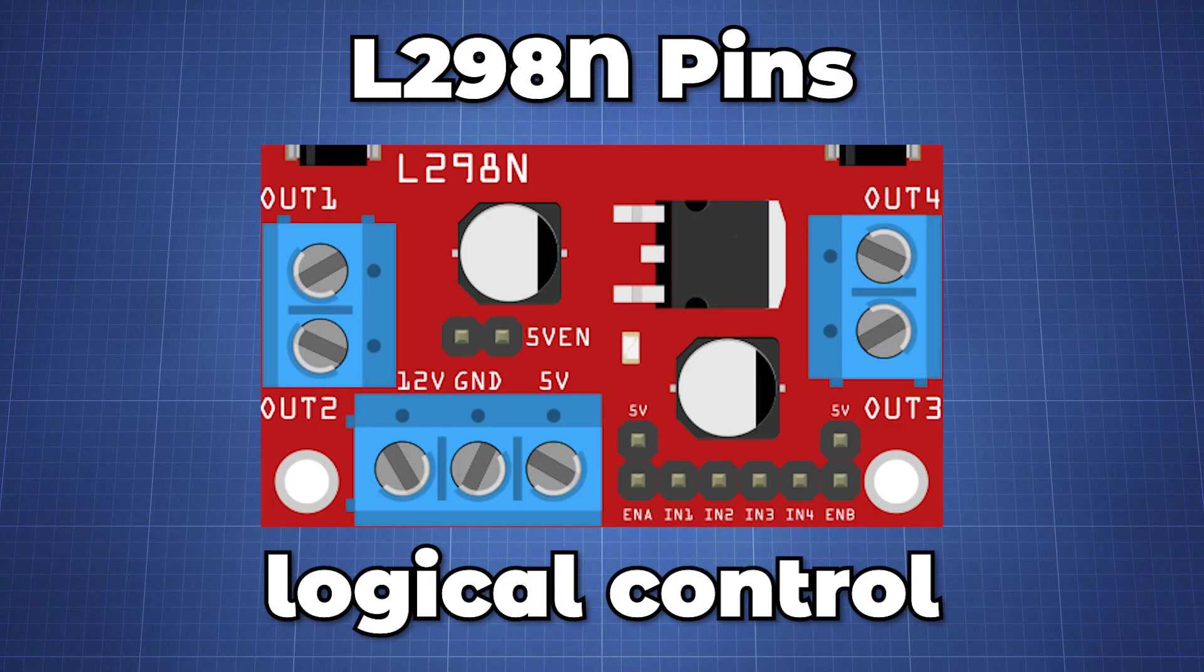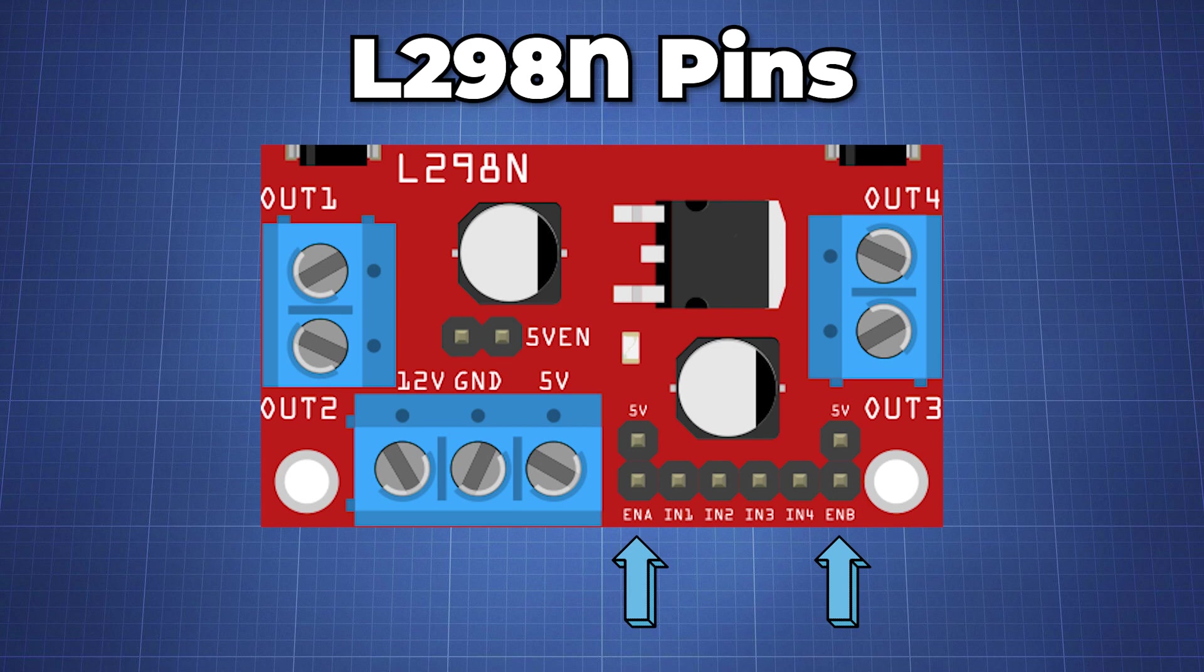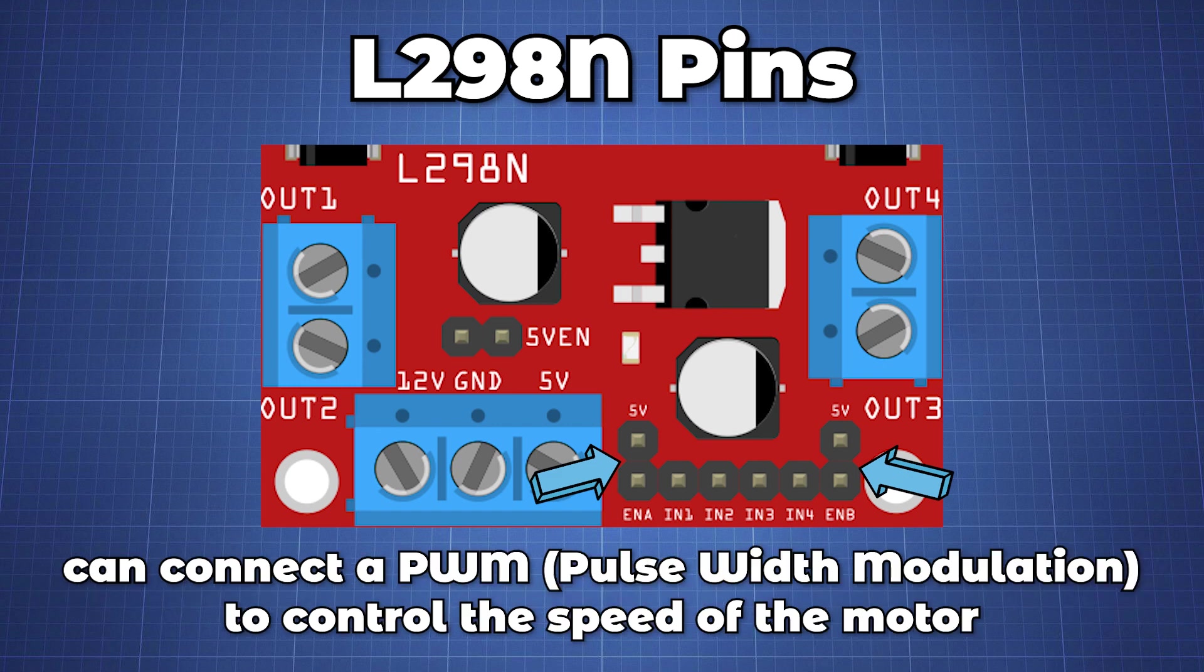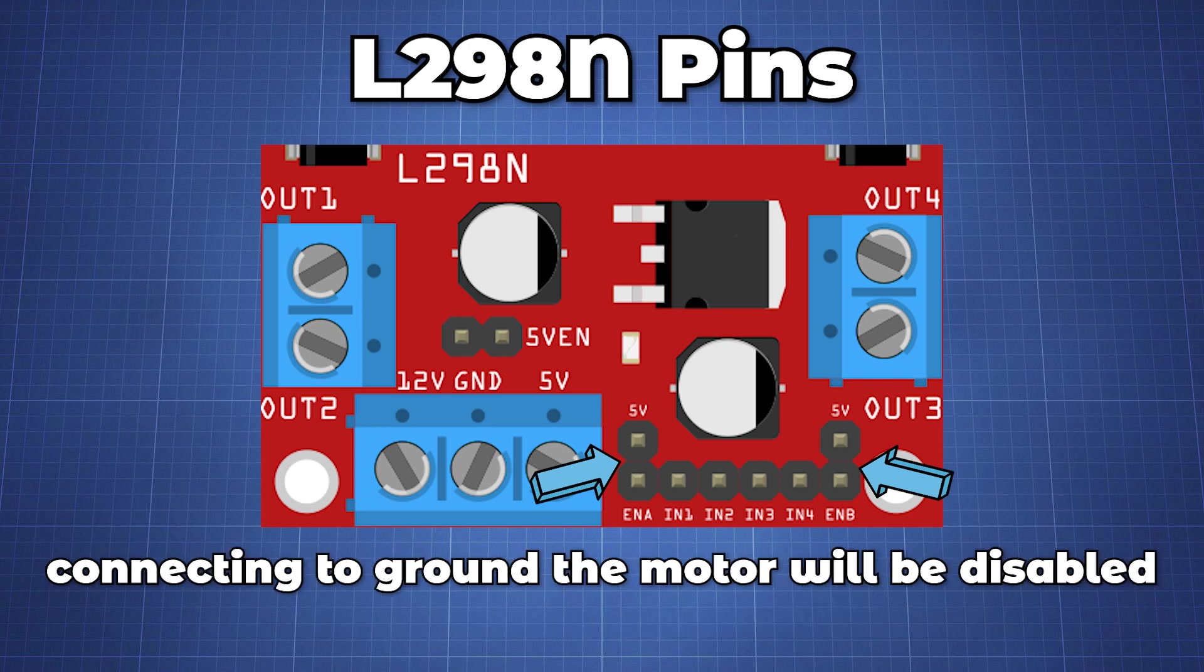Next are the logical control inputs. The enable A and enable B pins are used for enabling and controlling the speed of the motor. If a jumper is present on this pin the motor will be enabled and work at maximum speed. And if we remove the jumper we can connect a PWM input in that way we can control the speed of the motor. If we connect this pin to ground the motor will be disabled.